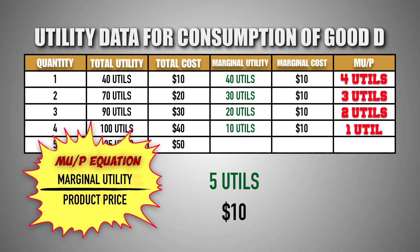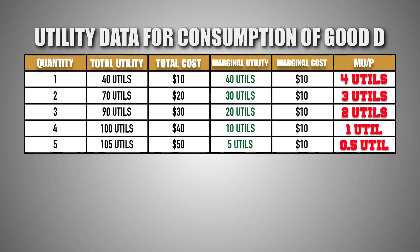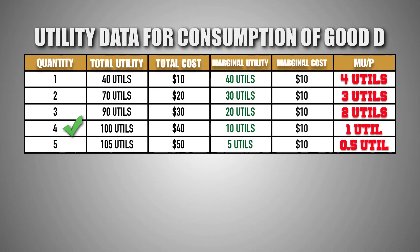Lastly, after spending $10 to purchase the fifth unit of good D, the consumer gained 5 utils of marginal utility, meaning the fifth unit provided half a util per dollar. When comparing marginal utility and marginal utility per dollar to the marginal cost of each unit, we can determine that the consumer should purchase 4 units of good D. The marginal utility from the fourth unit equals its marginal cost, while the marginal cost of the fifth unit is greater than the marginal utility it provides. As a result, consuming 4 units of good D will allow the consumer to maximize their utility.